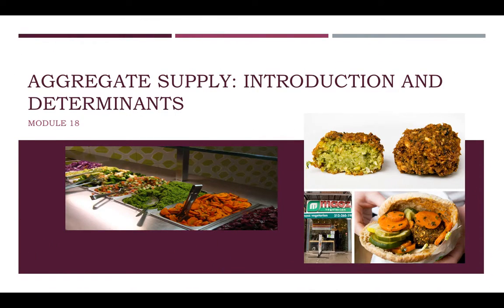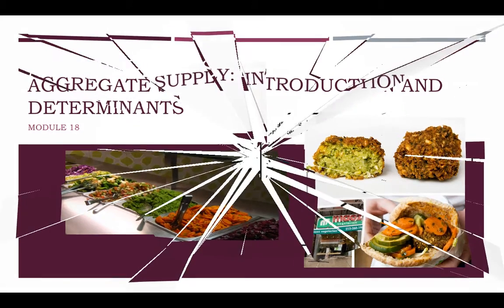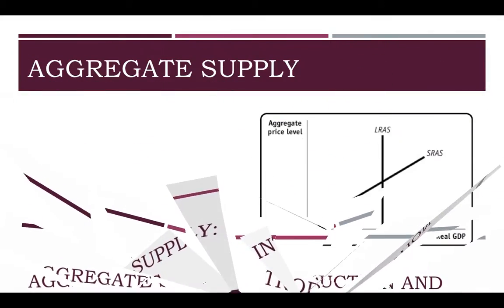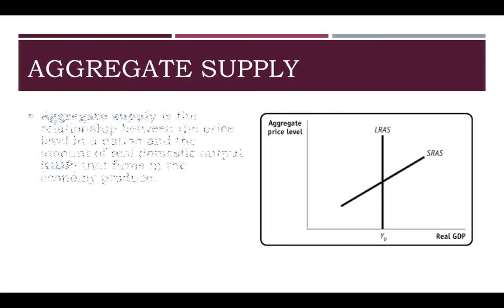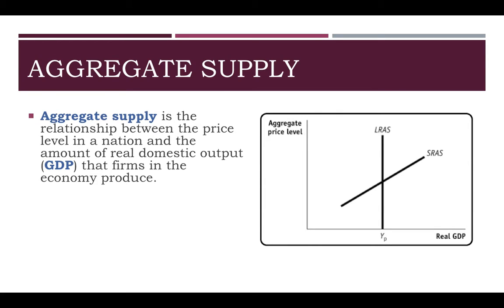This is Module 18, Aggregate Supply, and we will be talking about Mao's Falafel and my favorite sandwich. Aggregate supply is the relationship between the price level in a nation and the amount of output that firms are willing and able to produce.